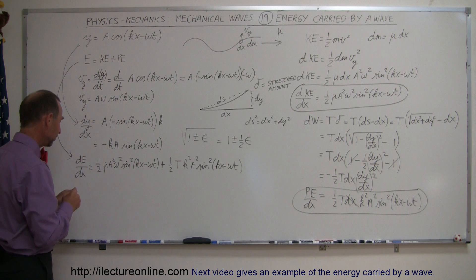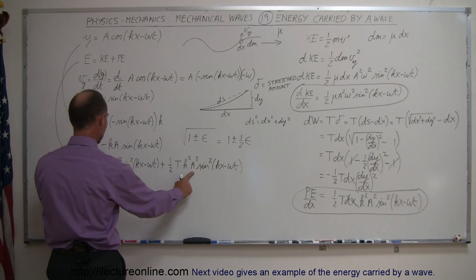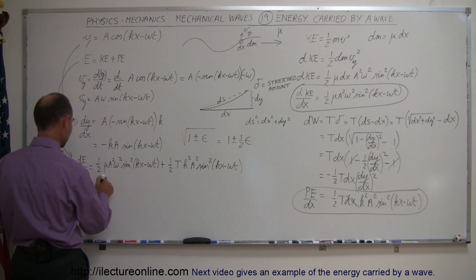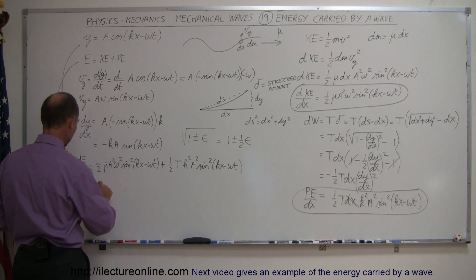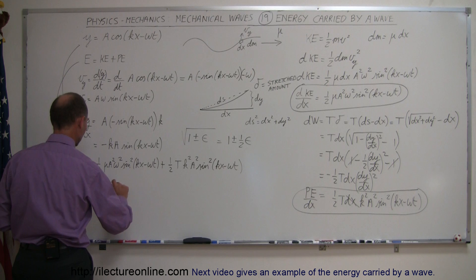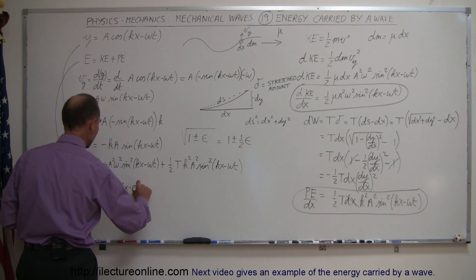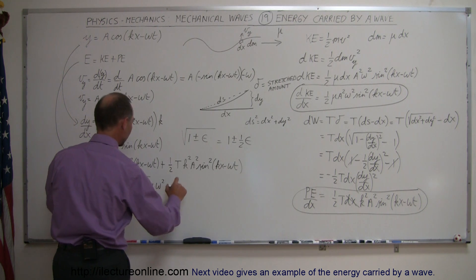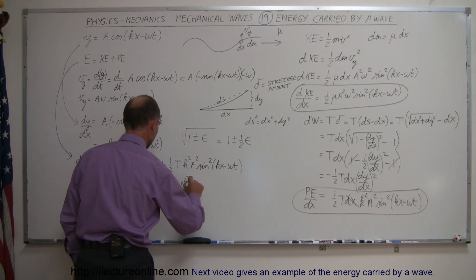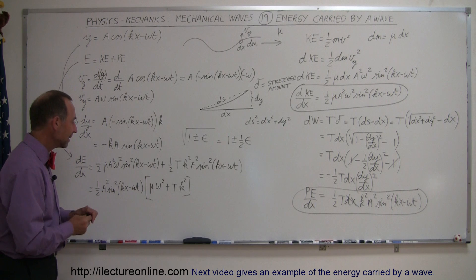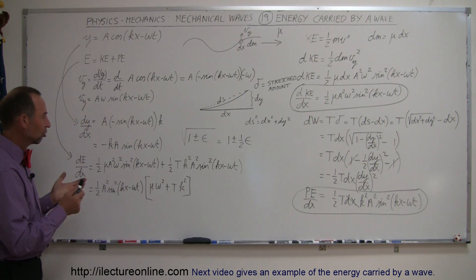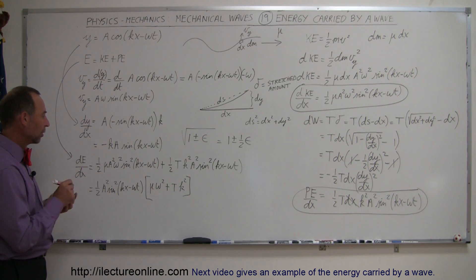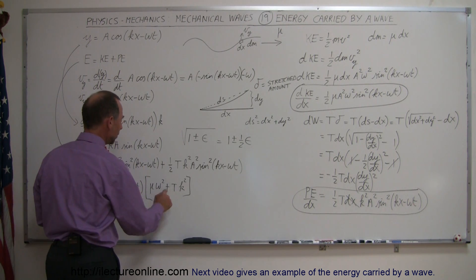Factoring out everything common — the one-half, A², and sin²(kx − ωt) — we're left with: ½·A²·sin²(kx − ωt)·(μω² + T·k²). Now we need to find a way to combine these two terms. We want to convert T and k into expressions involving ω and μ.